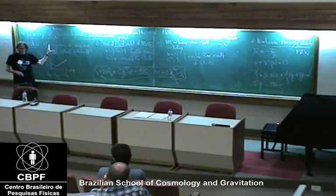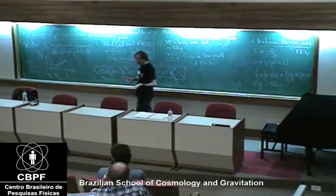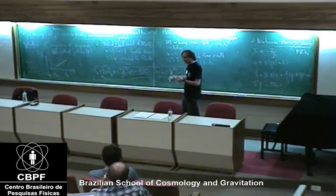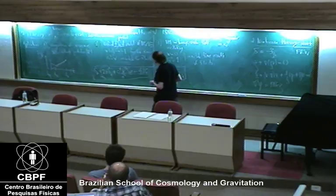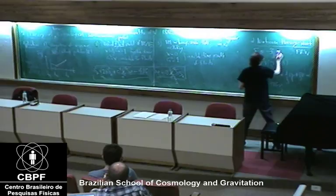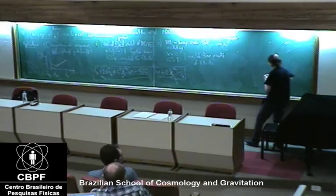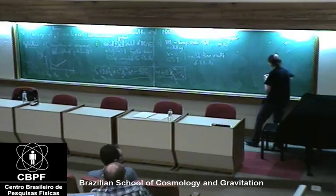Going back to the initial graph, all I've been discussing is the late-time evolution of fluctuations. But fluctuations that we are interested in were on super-Hubble scales for a long time, and the entire Newtonian analysis breaks down. We need to discuss the relativistic theory of cosmological perturbations.